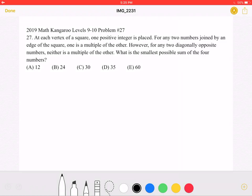What is the smallest possible sum of the four numbers? A, 12, B, 24, C, 30, D, 35, or E, 60.